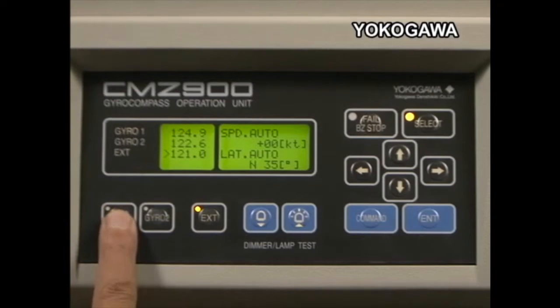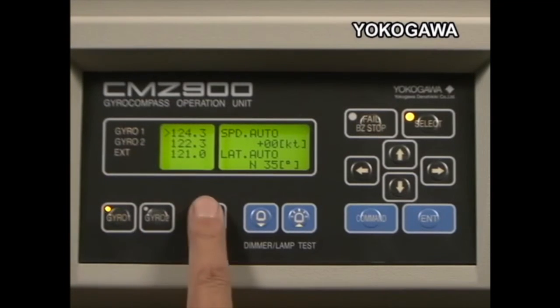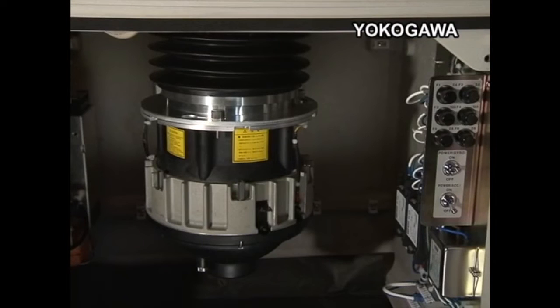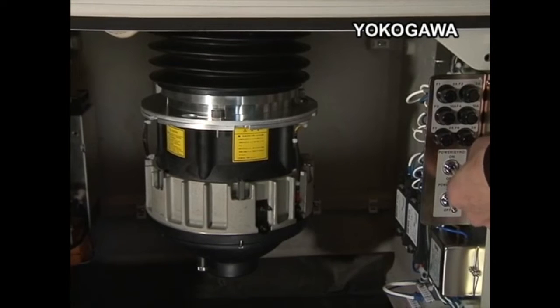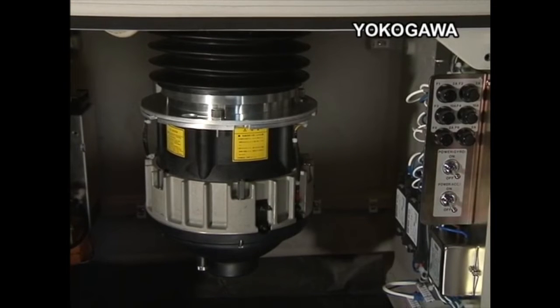The azimuth direction signals sent to other equipment can be selected from among gyro one, gyro two, and external. Turning off the main power switch stops the system.